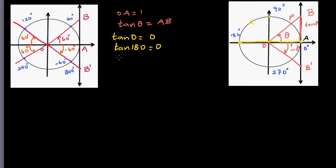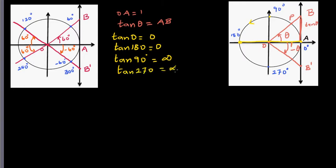Now, what is tan 90°? When the particle has moved 90 degrees, the tangent line and the y-axis become parallel, so you cannot find the length AB — or you can say it is infinity. As the angle approaches 90°, this value goes to infinity. Similarly, tan 270° is also undefined or infinity.